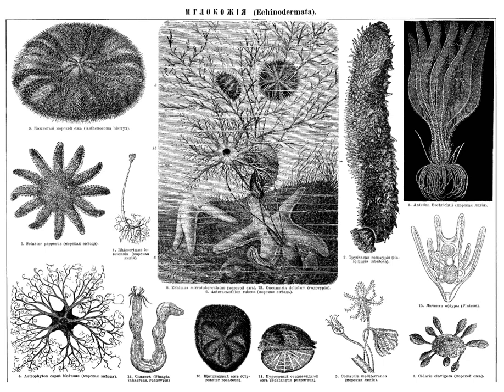Echinoderms possess a unique water vascular system — a network of fluid-filled canals derived from the coelom that function in gas exchange, feeding, sensory reception and locomotion. This system typically opens to the exterior through a sieve-like madreporite on the aboral surface of the animal. The madreporite is linked to the stone canal, which extends to a ring canal that encircles the mouth or esophagus. From this, radial canals extend along the arms; short lateral canals branch off, each ending in an ampulla, part of which protrudes through a pore to the exterior as a podium or tube foot.